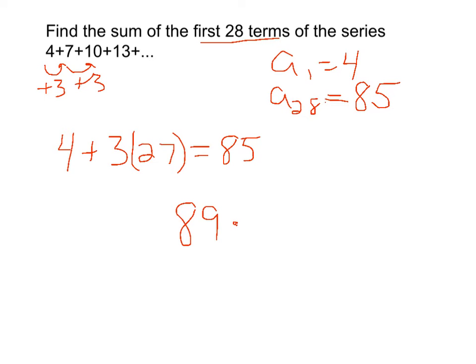Well, how many pairs will there be? Well, if there are 28 terms, that means there's going to be 14 pairs. So, our sum of our first 28 terms in this arithmetic series is equal to 89 times 14, which is equal to 1,246. There's our sum for this series.